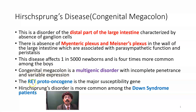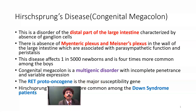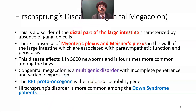The RET proto-oncogene is the major susceptibility gene. Hirschsprung's disease is more common among Down syndrome patients, that is the trisomy 21 condition.